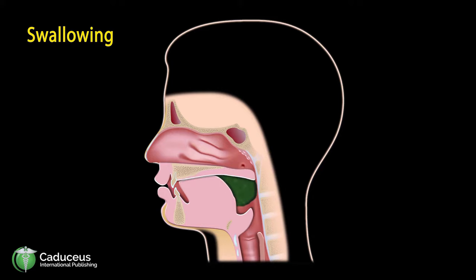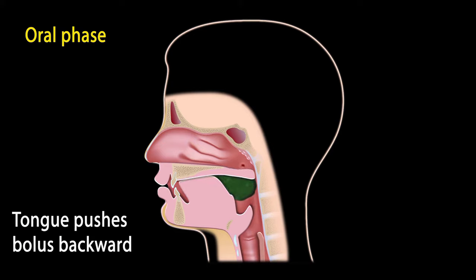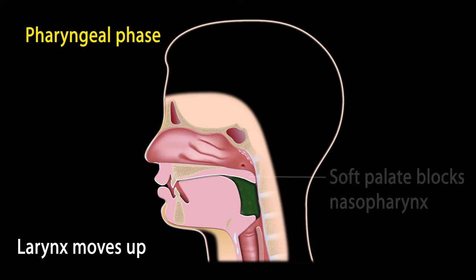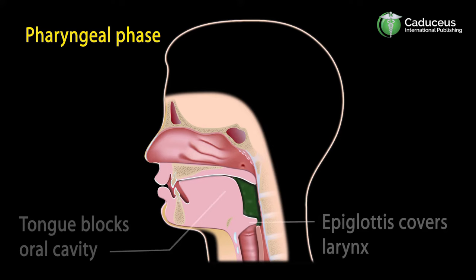The epiglottis is located on the backside of the tongue. There are tissues that connect it to the hyoid bone. Note the thyroid cartilage, or the Adam's apple. When you swallow, food or air comes up over the tongue and down across the top part of the epiglottis.